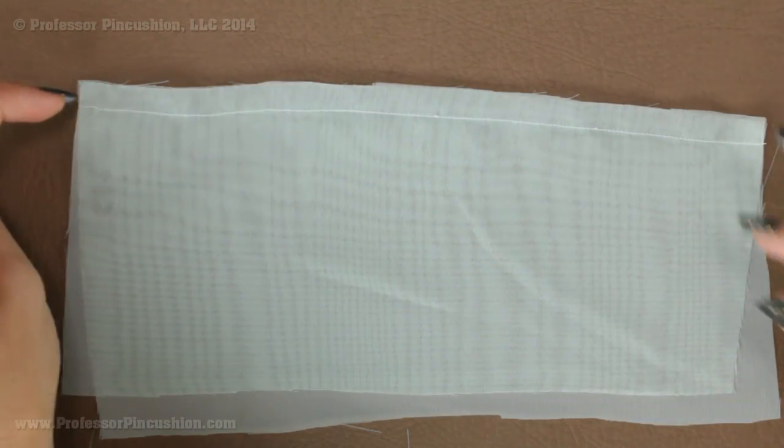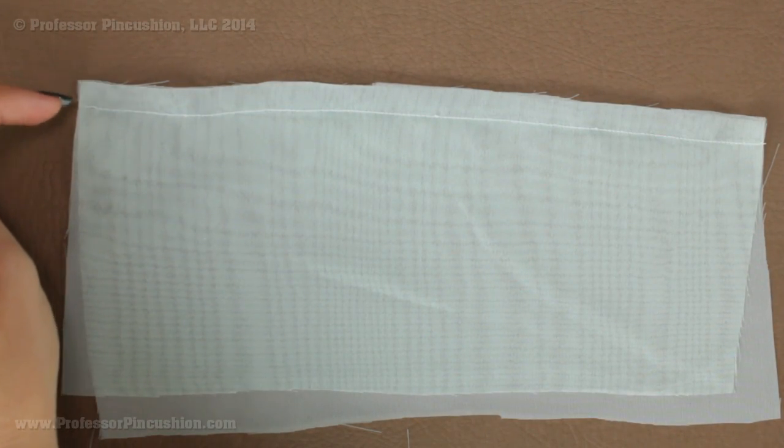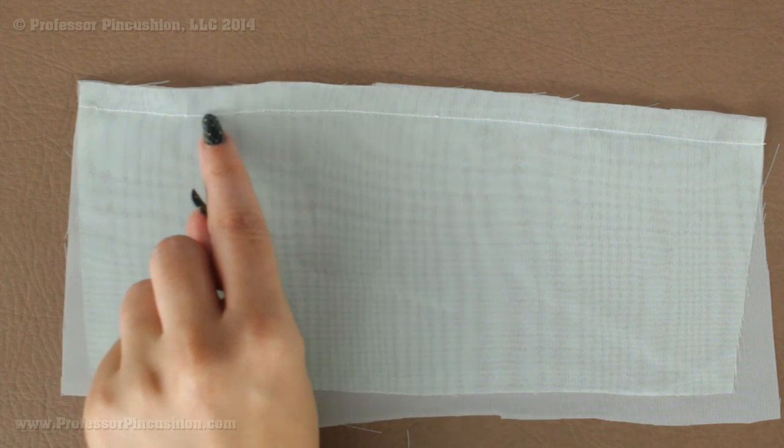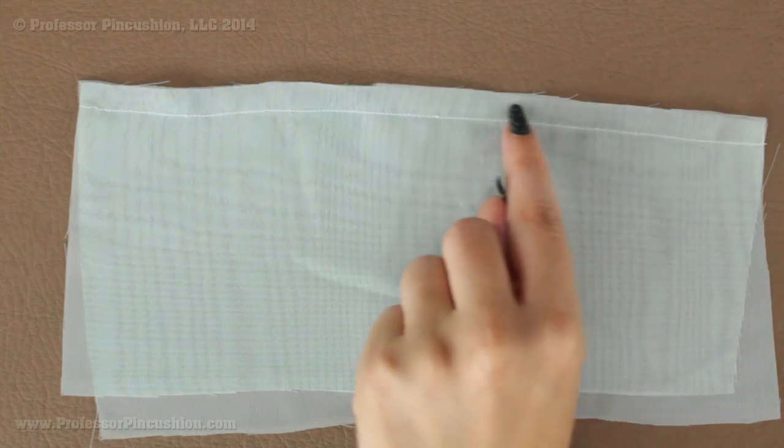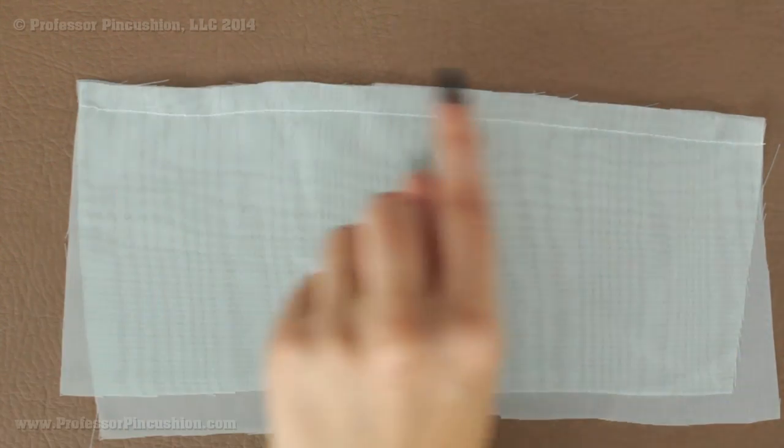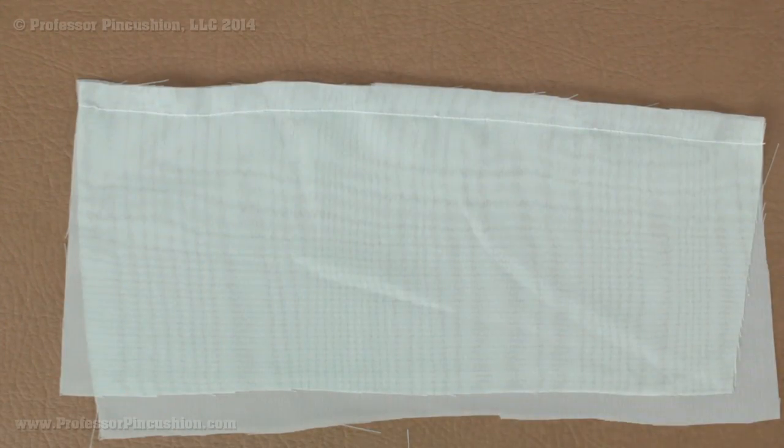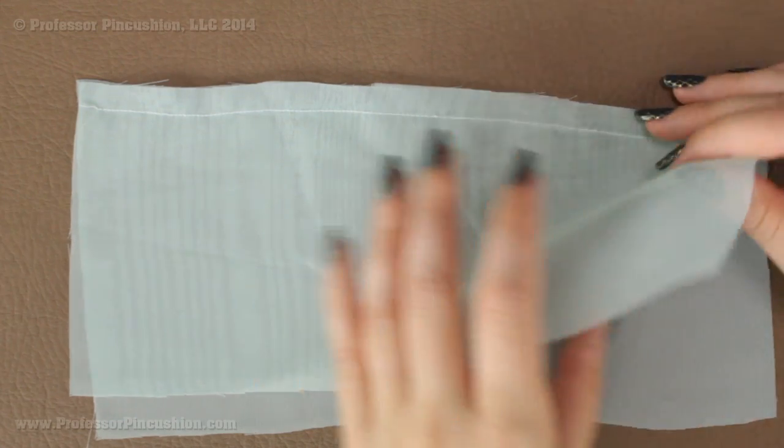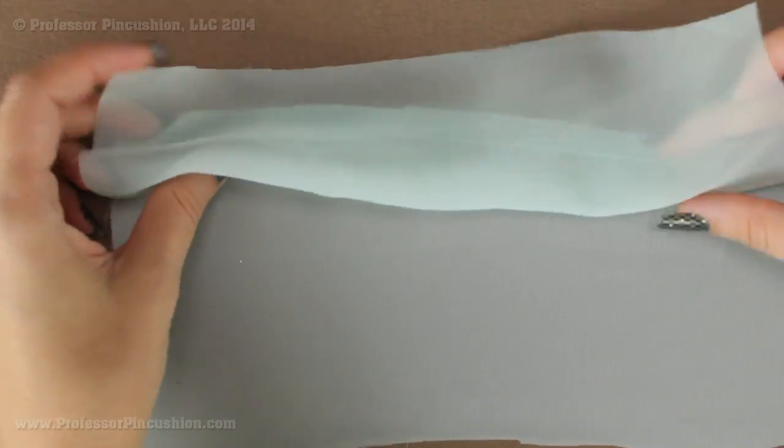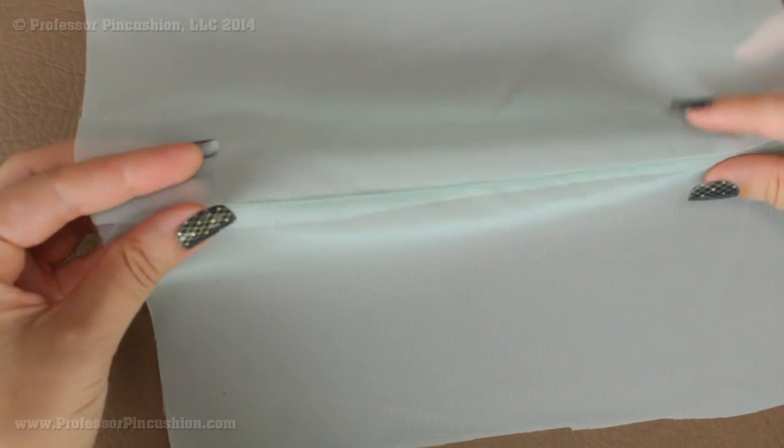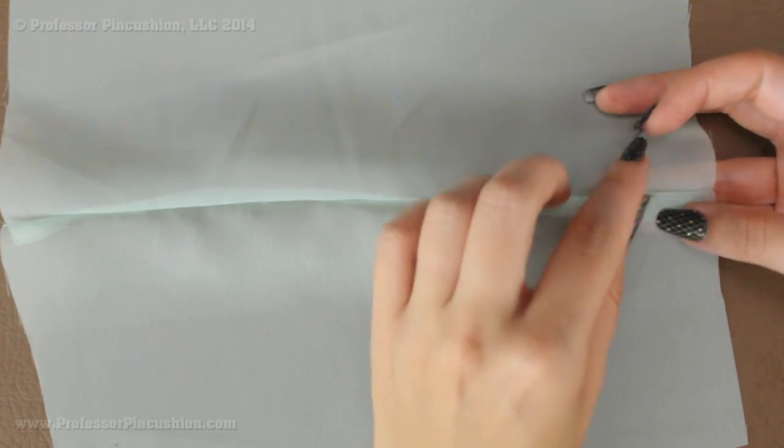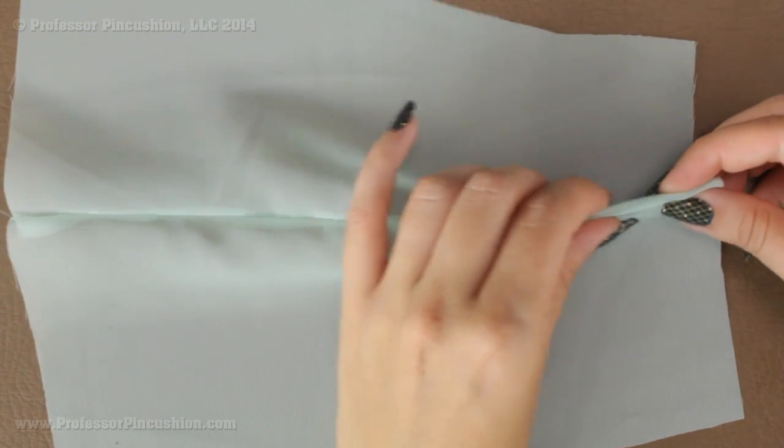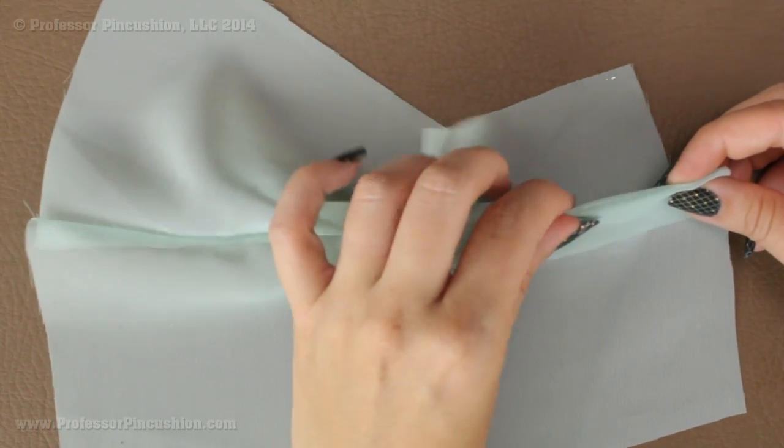After you do your seam, if I'm doing a five-eighths seam, I'm going to do my first seam at the three-eighths line. Then I'm going to trim off the raw edge, and you're just trimming a little bit, about an eighth of an inch. Then you can go ahead and press this. If you're looking now at this other side, you can see your seam line and you're going to fold it right on the seam line.